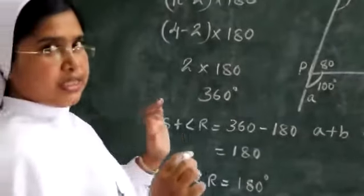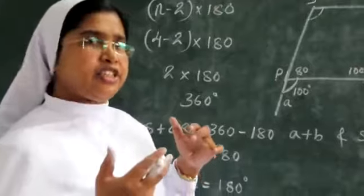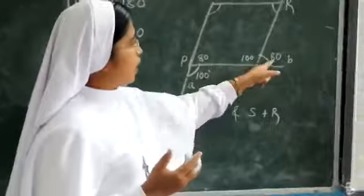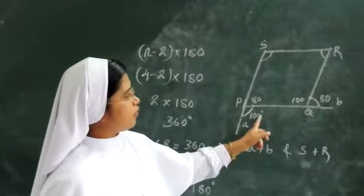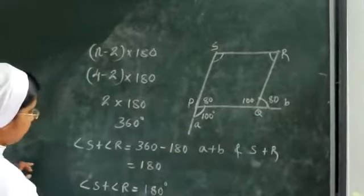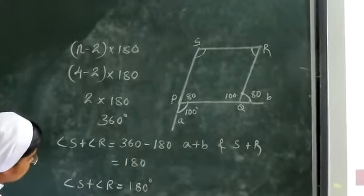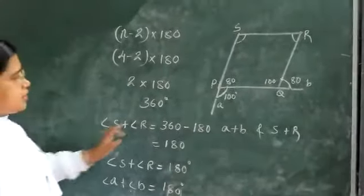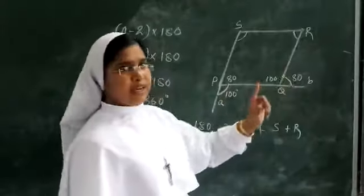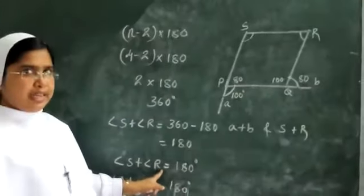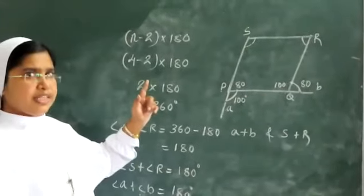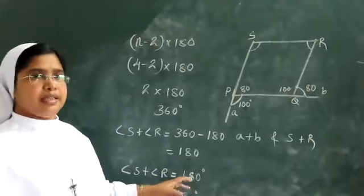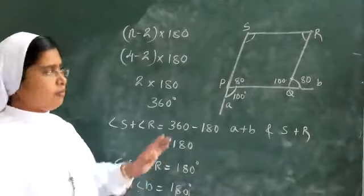So we found that S plus R equals 180. And the sum of the two outer angles A plus B was also 100 plus 80 equals 180. So the sum of the two outer angles equals the sum of the inner angles at the other two vertices — they are equal.